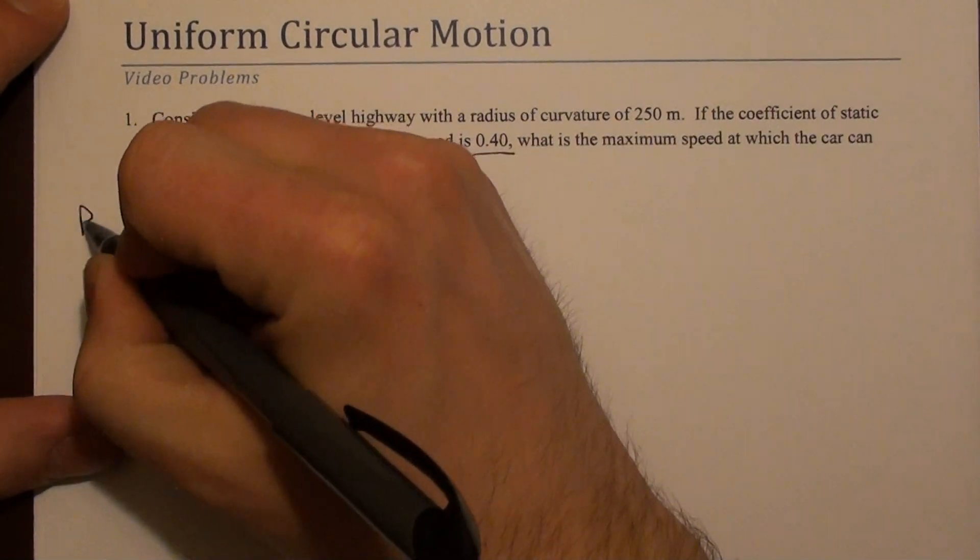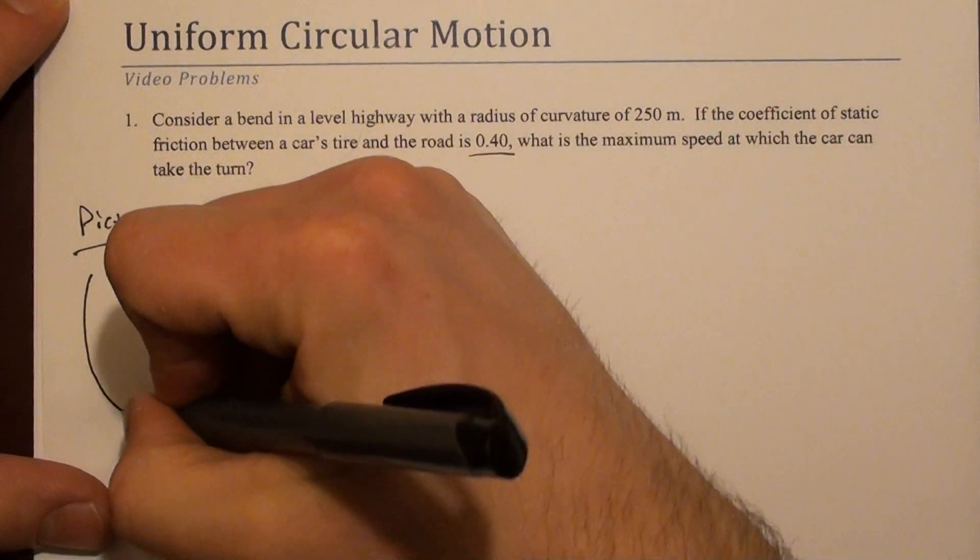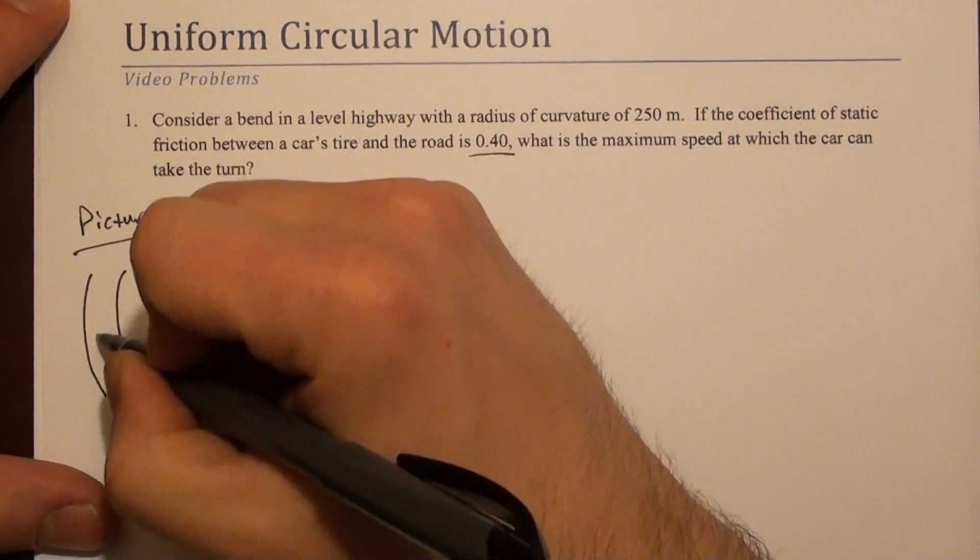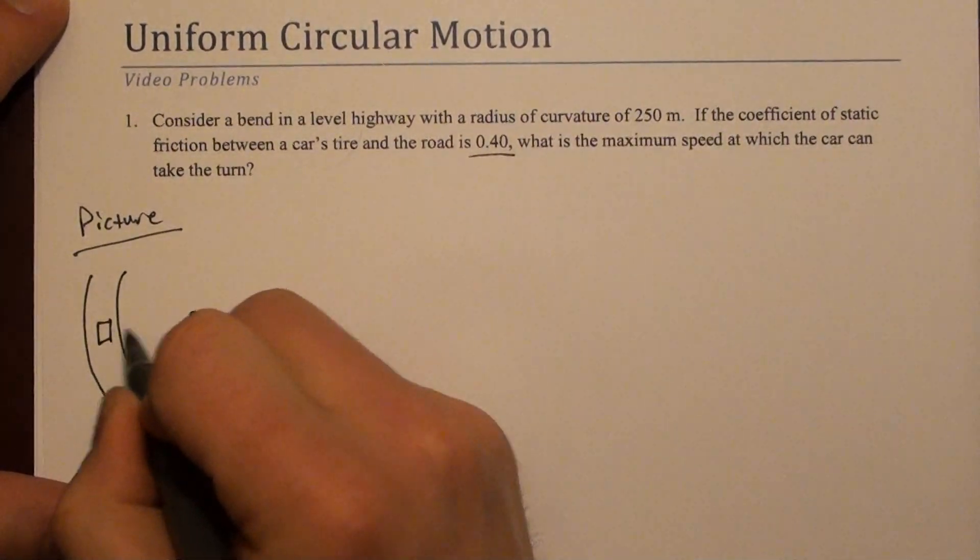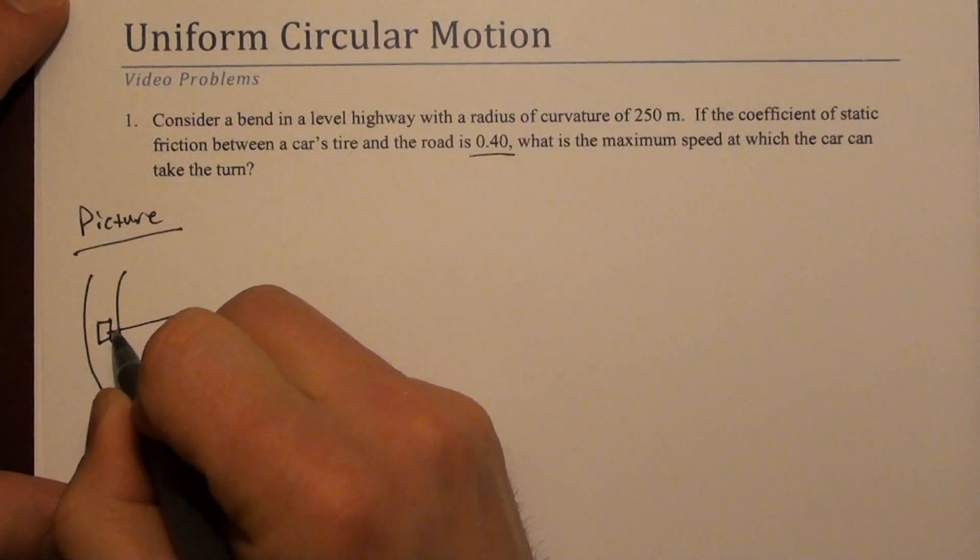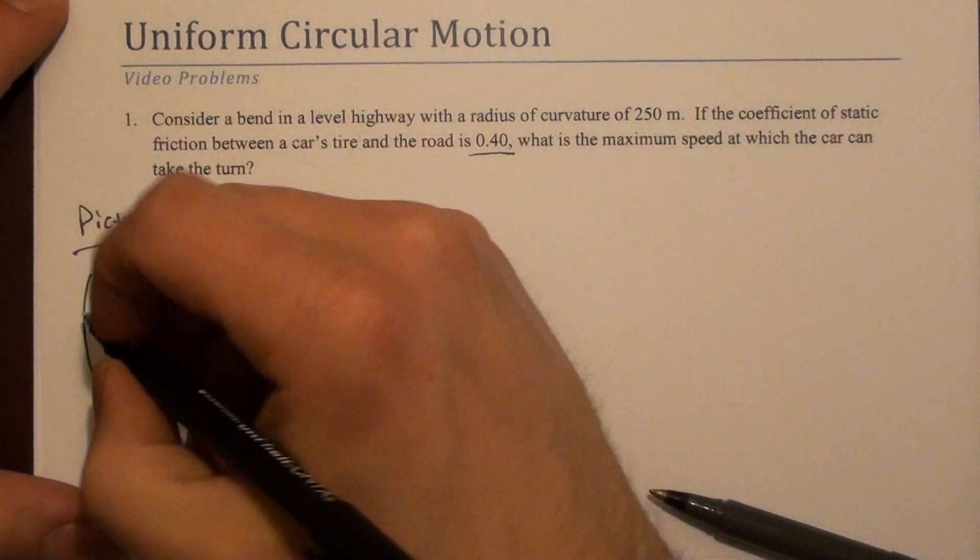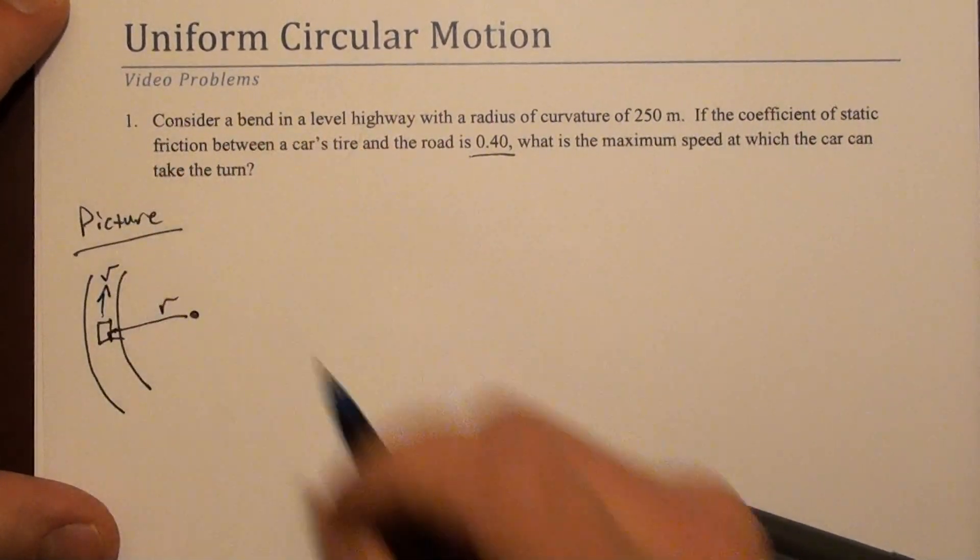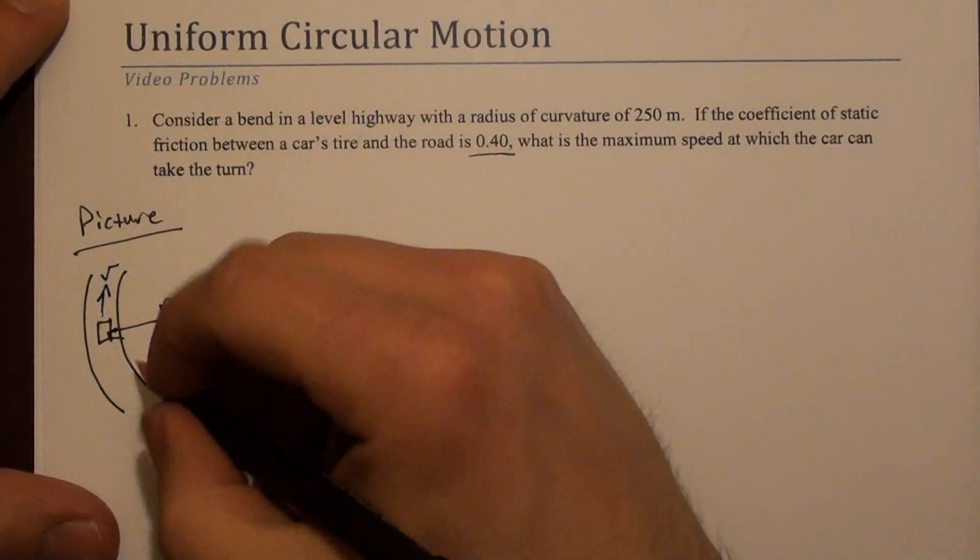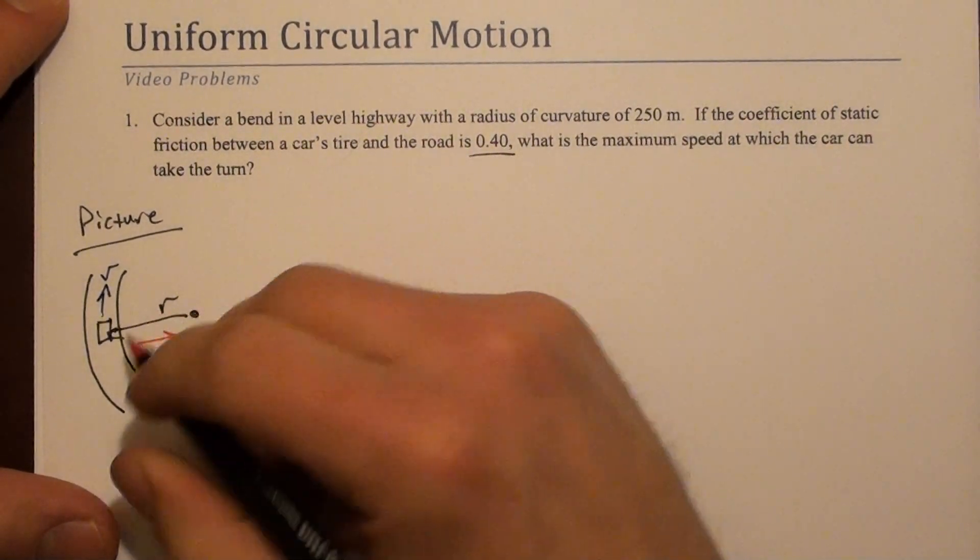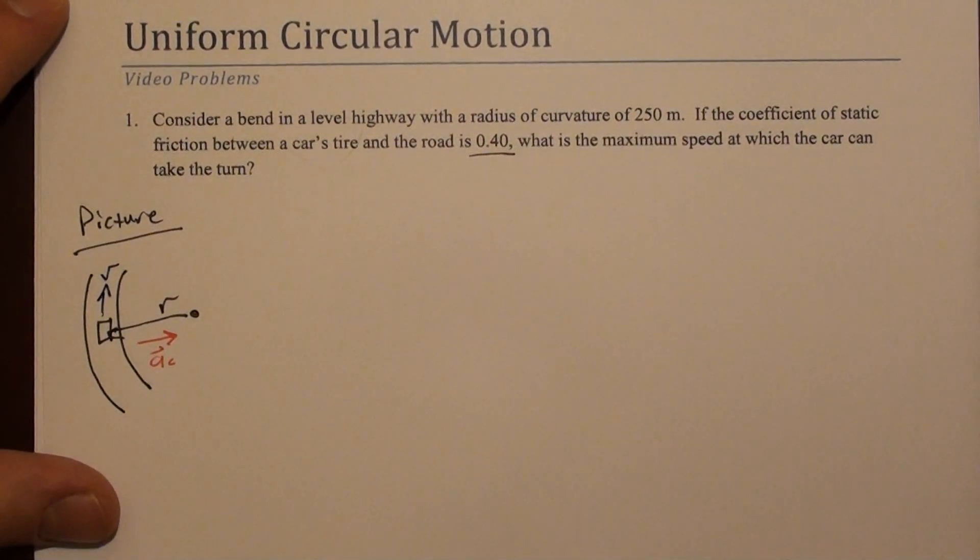Let's draw a picture to imagine what's going on here. Here's our car. We'll define the radius of curvature as r. Maybe the car is traveling in this direction, and if that's the case, then the centripetal acceleration looks something like this, pointing toward the center of the circular path.